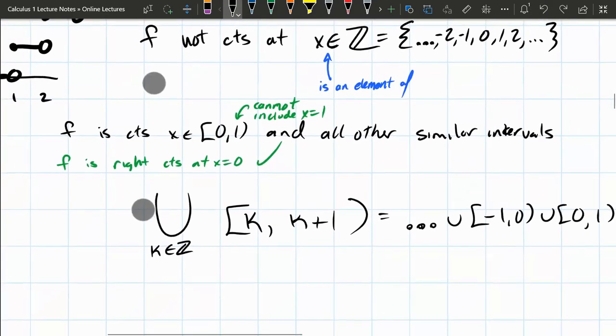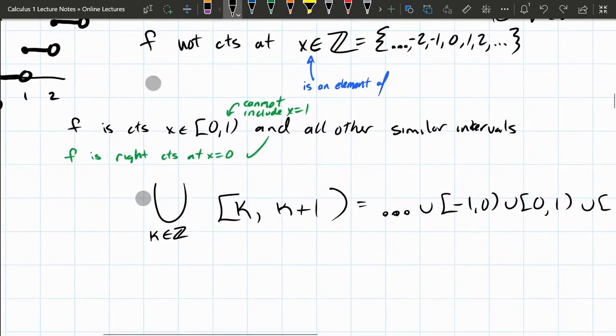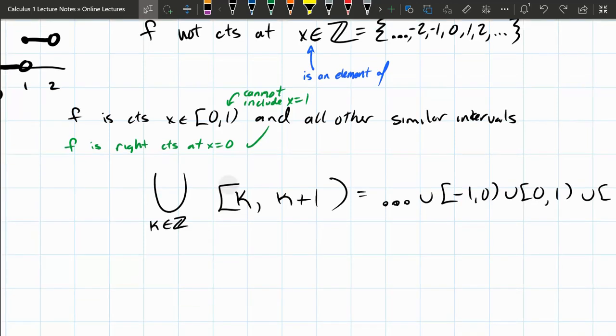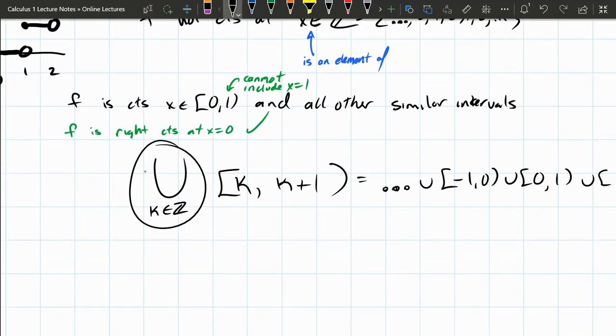So you could write these all out unioned together. So here's the union symbol. And underneath of it, it just says that, remember, k is an integer. So k is a whole number. And it's the union. You union all of the intervals from k to k plus 1. Closed at k, including k, but not including k plus 1.